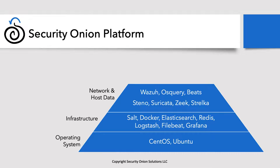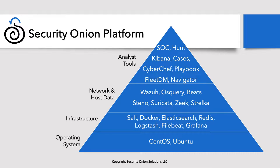Now that we have data generated by our network and host tools, let's look at the analyst tools that allow us to pivot around these different data types and slice and dice them. At the very top we have the Security Onion Console, or SOC — the web interface that allows access to all the other tools. That includes Alerts and Hunt. We also have Elastic Kibana, which allows you to visualize your data using dashboards. And then we have Cases — a component inside the Security Onion Console that allows you to escalate an alert or event and create a case.